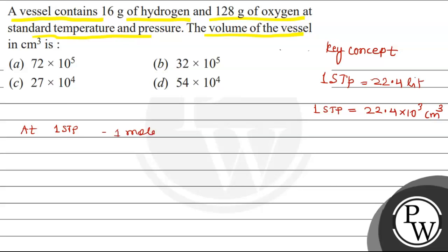1 mole is 22.4 × 10³ cm³ as we mentioned. So 16 grams of H₂, that is hydrogen, will convert to 8 moles.